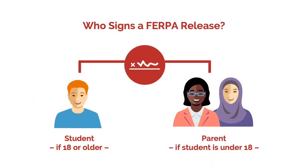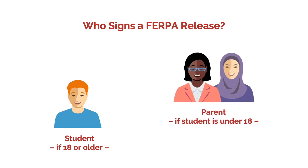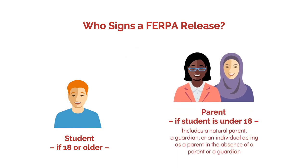Who signs a FERPA release? The parent signs a release for any student under 18 years old. If the student is 18 or older, the student signs. FERPA defines parent for this purpose as a natural parent, guardian, or individual acting as a parent in the absence of a parent or guardian. It's also important to look at local school district policy, because it may define the term parent and who can sign more specifically.